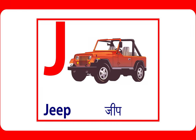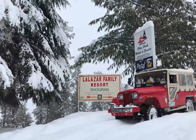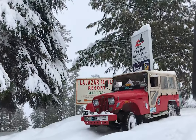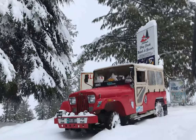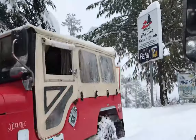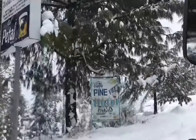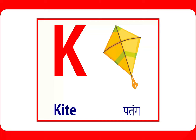J is for jeep. Jeep is a transport. K is for kite.